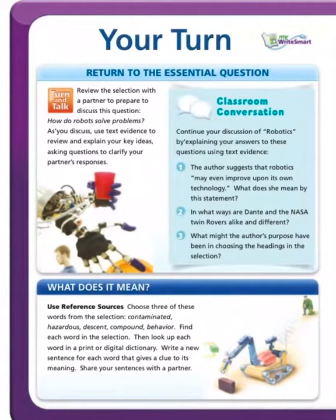Discussion questions: The author suggests that robotics may even improve upon its own technology — what does she mean by this statement? In what ways are Dent and the NASA twin rovers alike and different? What might the author's purpose have been in choosing the headings in the selection?